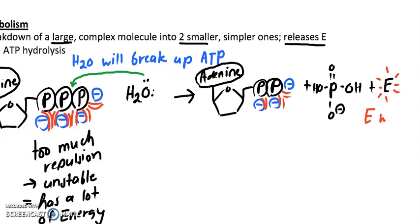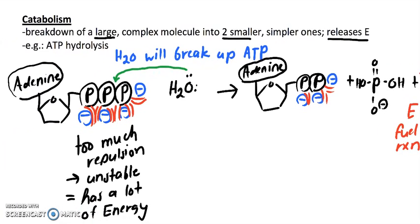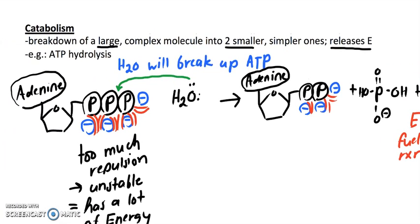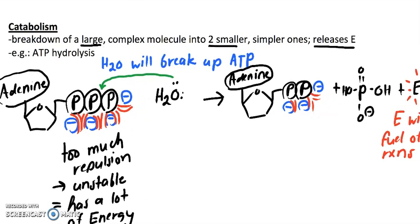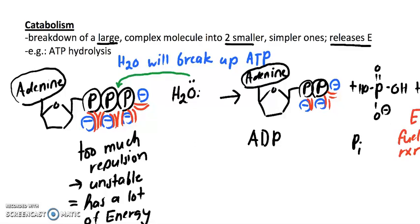So when it broke up and relieved itself, it's releasing this energy, and this energy here can go fuel other reactions in the body. So this is an example of a catabolic reaction. We started off with a large complex, that would be your ATP, and it breaks up into two molecules. We have this adenosine diphosphate and this inorganic phosphate, so two smaller molecules, and we also release energy.